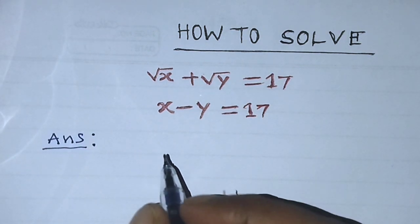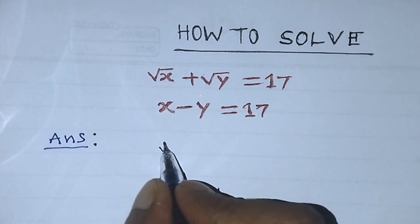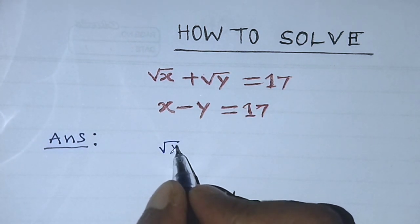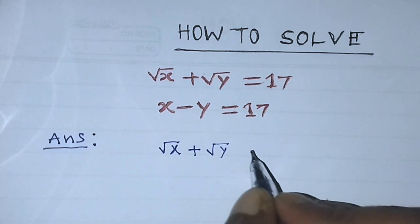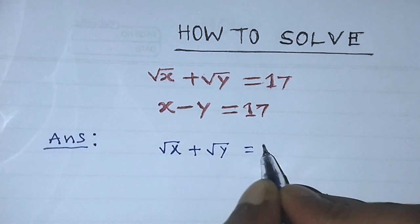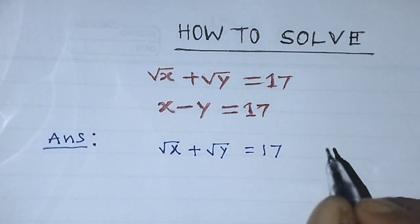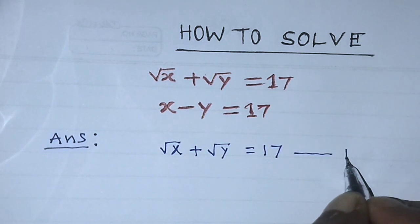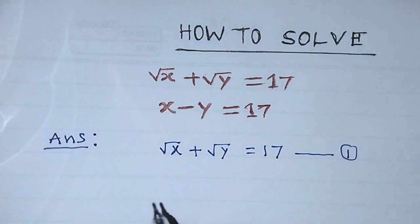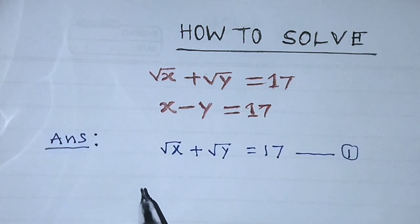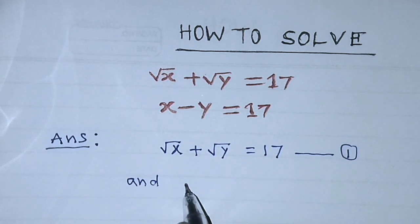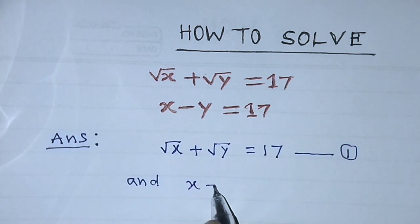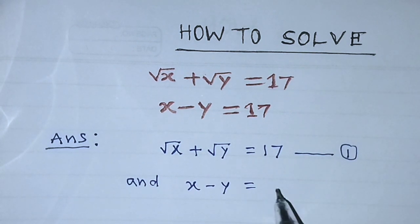Our given two equations are: root over of x plus root over of y is equal to 17 — this is equation number 1 — and the second equation is x minus y is equal to 17.